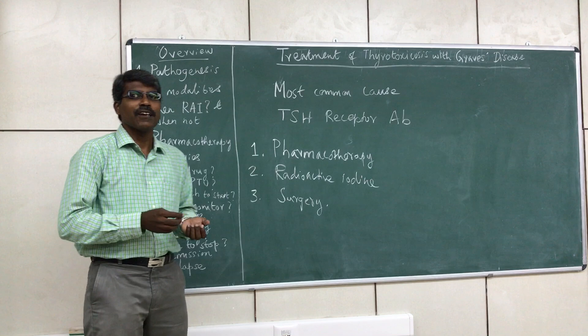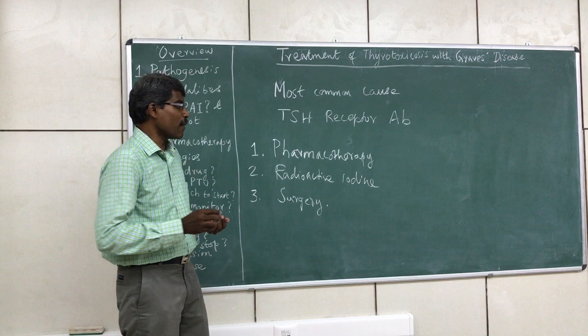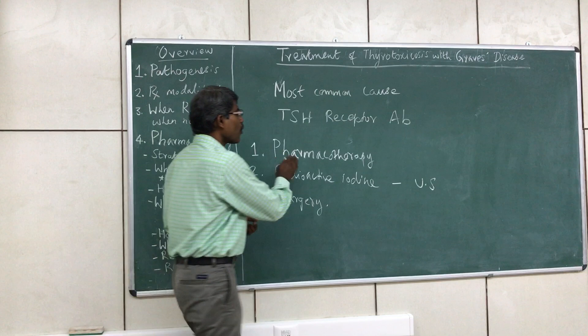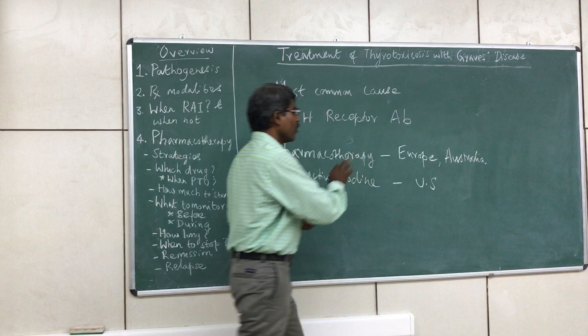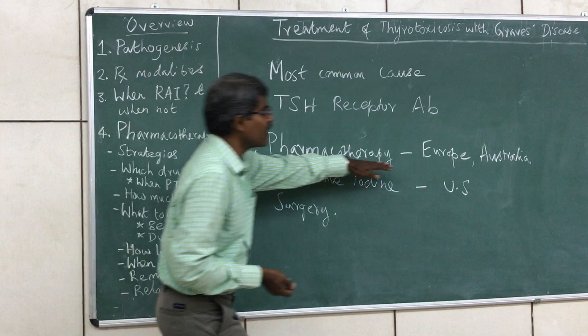If you look into the general consensus, radioactive iodine is preferred in the United States — it is the primary modality of treatment there. Whereas in other countries like European countries, Australia, Japan, and India, pharmacotherapy is the primary modality of treatment for this condition.